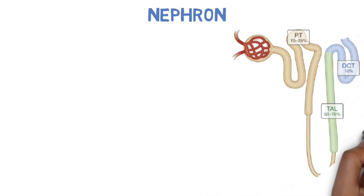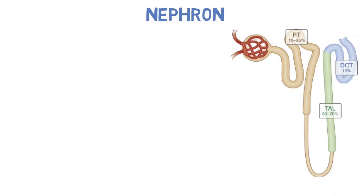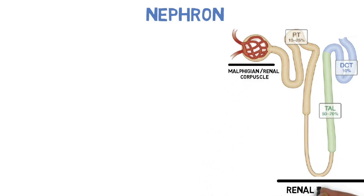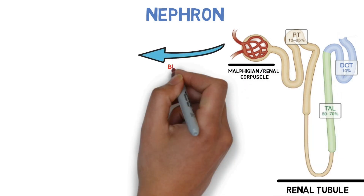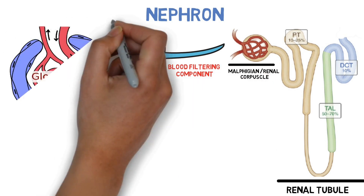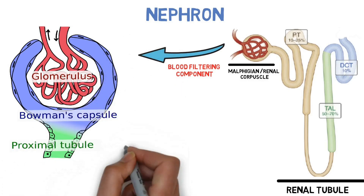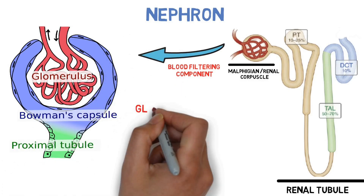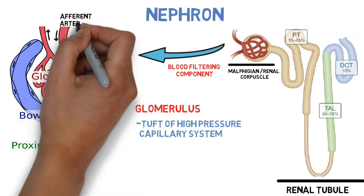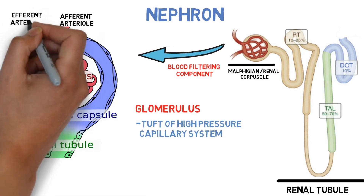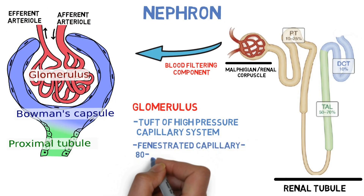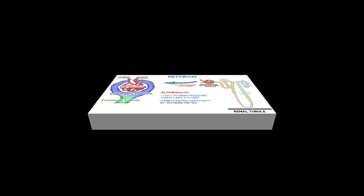Nephrons are made up of renal corpuscle and renal tubule. The renal corpuscle is a blood-filtering component of the nephron and consists of two parts: glomerulus and Bowman's capsule. The glomerulus is a tuft of high-pressure capillary system lying between the afferent and efferent arterioles. The capillaries are fenestrated to allow filtration to take place.